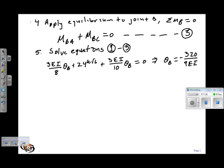That negative indicates that the rotation at B for the beam is counterclockwise.